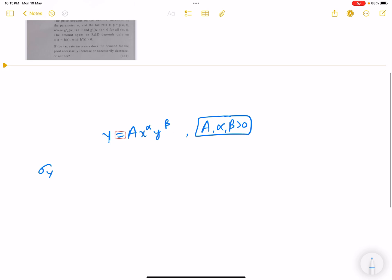Now elasticity of substitution, we know this is percentage change in K by L, but here the production factors are x and y. So let y be K, x be L. Percentage change in y by x upon percentage change in MRTS. I told you this is not mentioned in the book but this is used in the book.